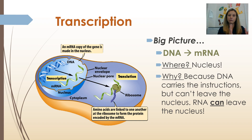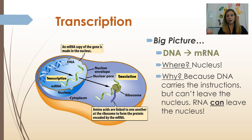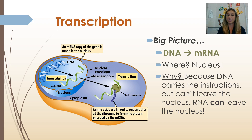If DNA carries the recipe for proteins but proteins are made at the ribosome, then there has to be a process of copying down that recipe at grandma's house — the nucleus where DNA is — and getting it to your house where you're going to make the cookies, the chocolate chip cookies or the proteins. Big picture: DNA being used to make a molecule of messenger RNA, that's transcription. This is taking place in the nucleus because that's where DNA is found, and it's happening because DNA carries the recipe for building a protein but it can't leave the nucleus. So there has to be a way to copy down the recipe into a molecule of messenger RNA because RNA can leave the nucleus.